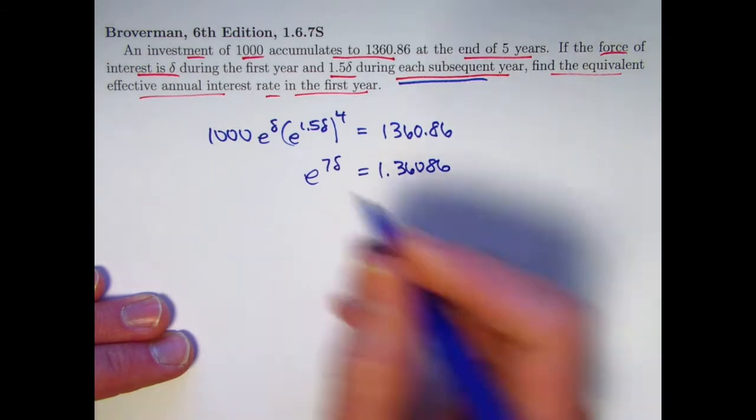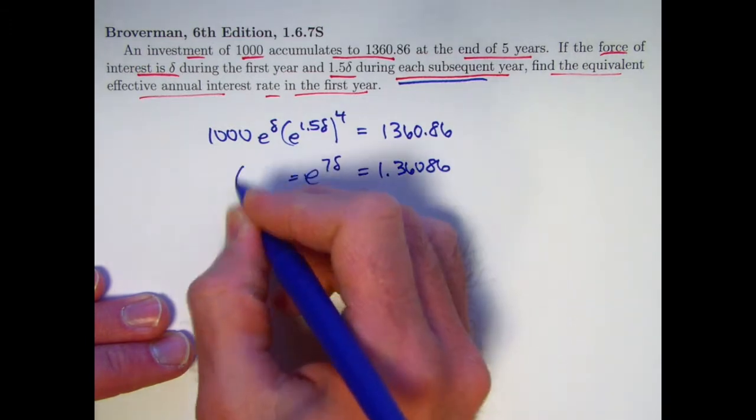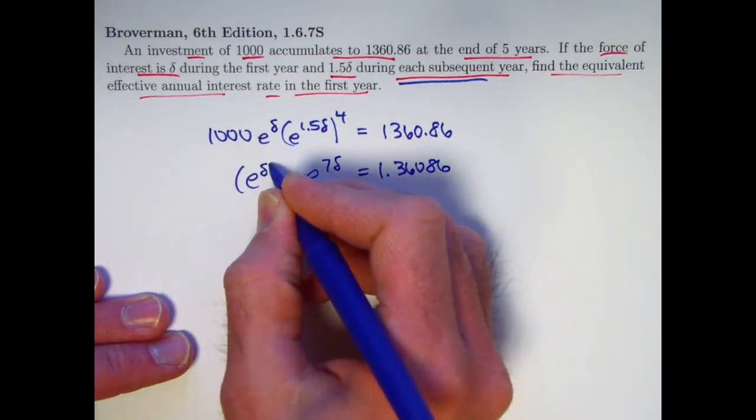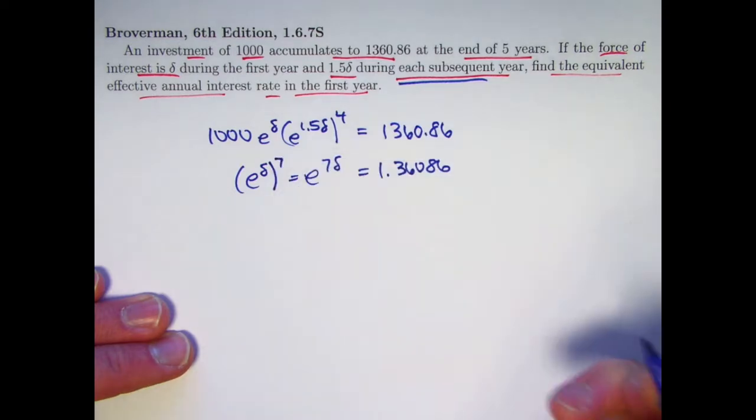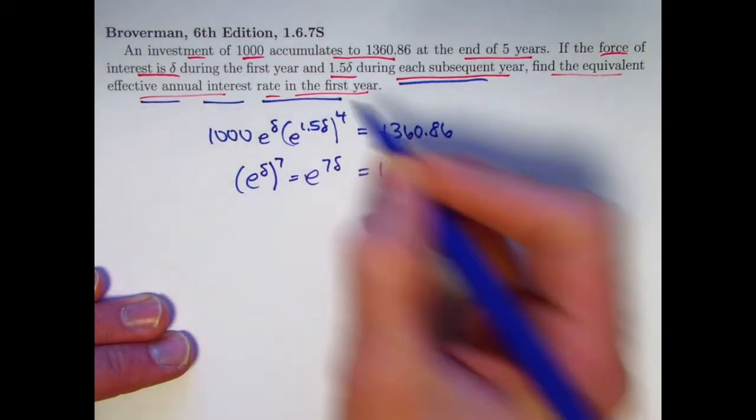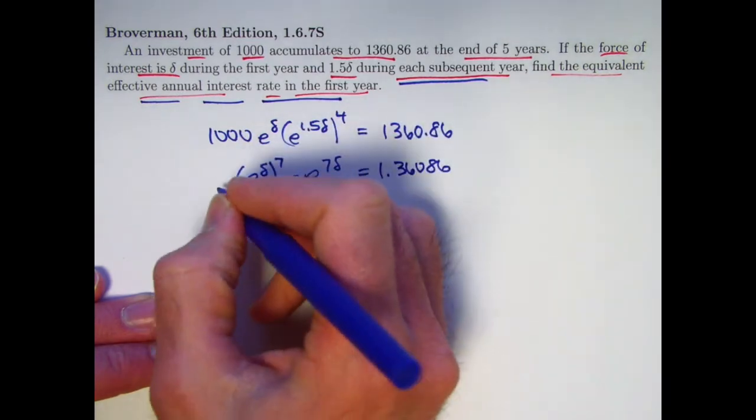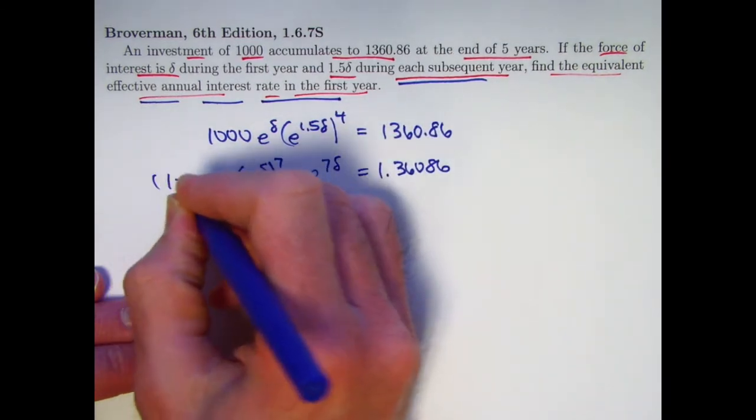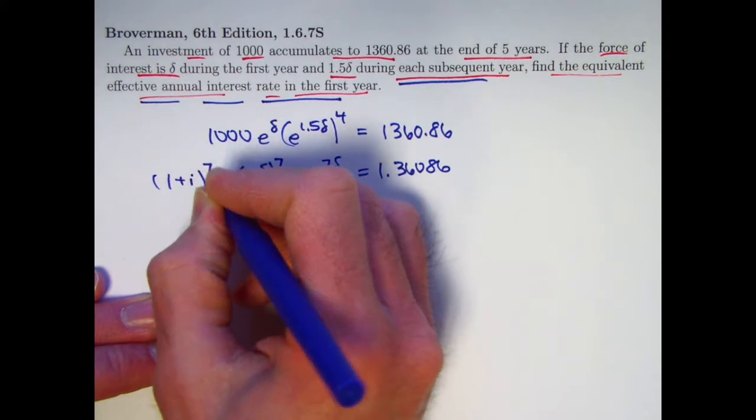We could solve this equation for delta, but we don't have to. In fact, thinking about what we want to solve for, it's better to think of it this way because we're after the effective annual interest rate in the first year. We're after i where 1 plus i equals e to the delta.